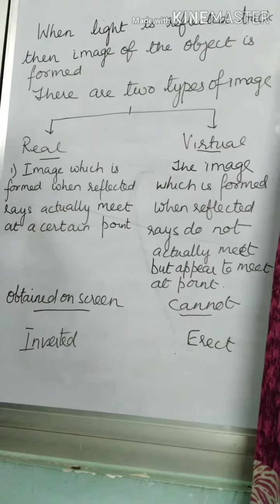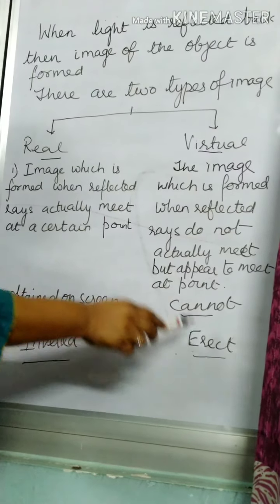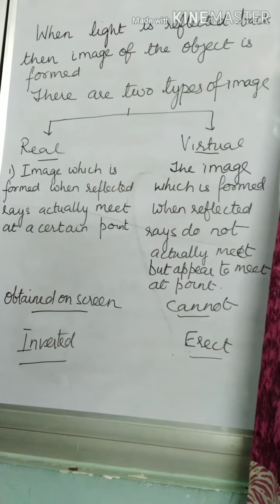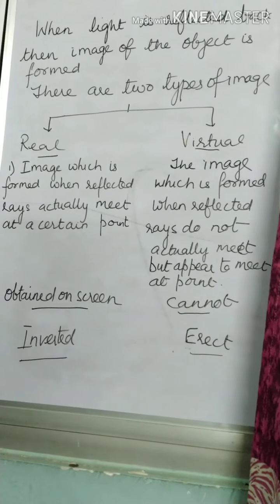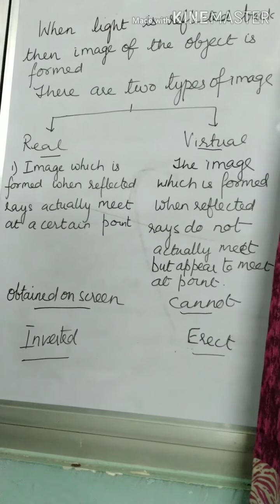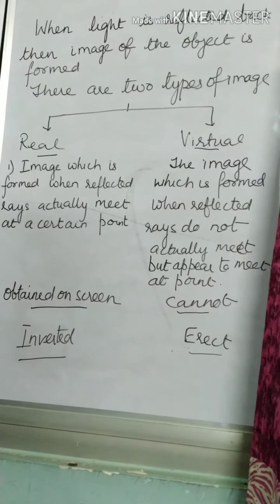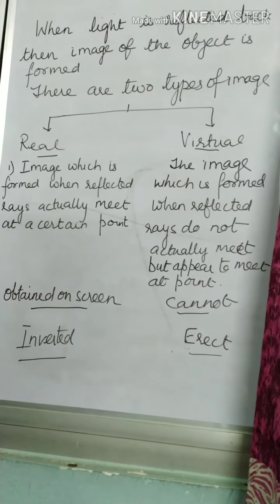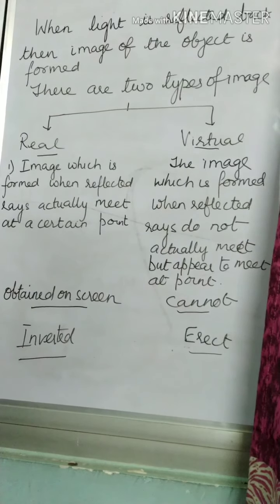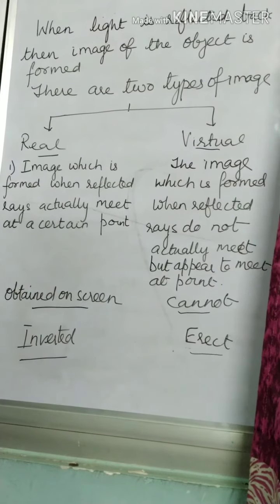The real image is always inverted, and in the case of virtual, it is always erect. When you see yourself in a mirror, you see an erect image and your image cannot be obtained on a screen — that happens to be the virtual image. But when you click a photograph with the help of a camera, the image is captured on the film — that is your real image, and it will be formed inverted.